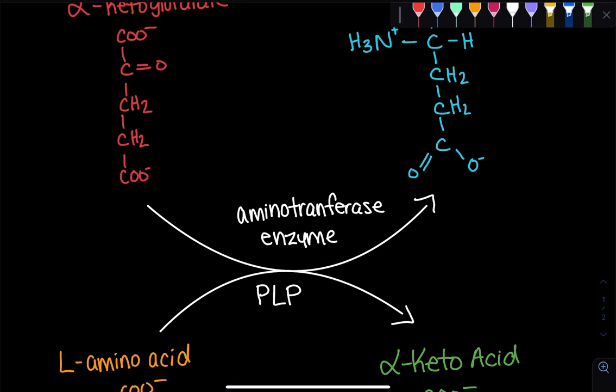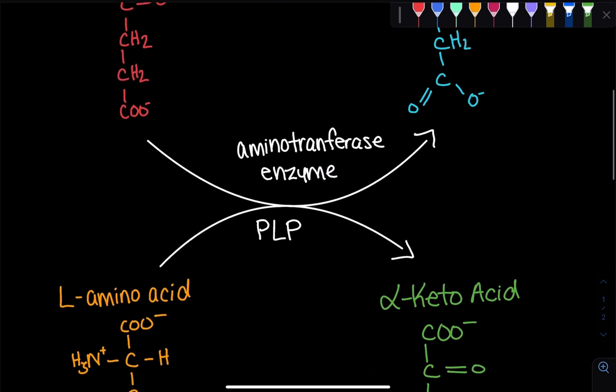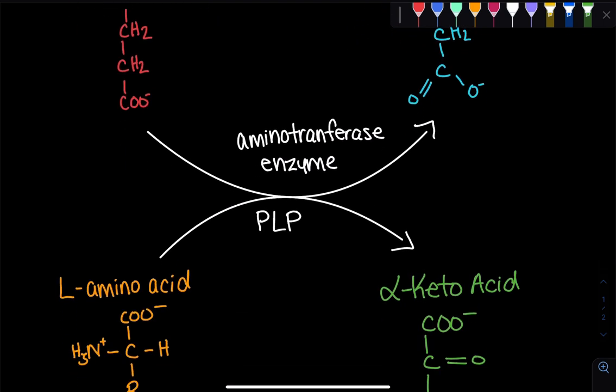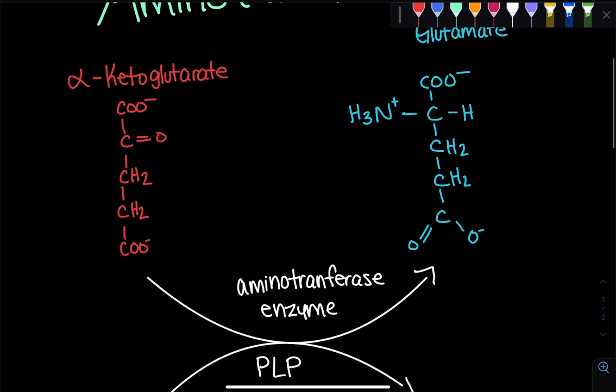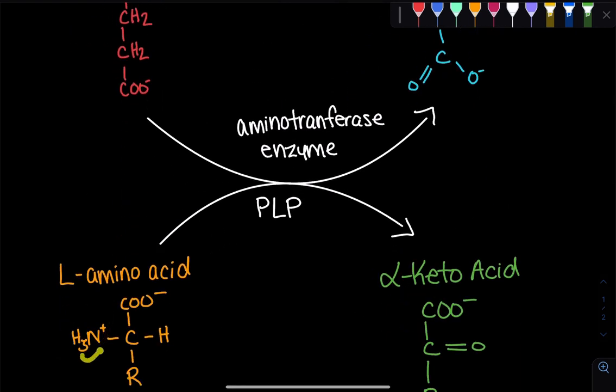Now, PLP is actually bound to the aminotransferase. Essentially, what it does is that when this reaction is occurring, it stabilizes that unstable carboanion intermediate when we're going through this process of transferring an amino group to the glutamate. When we remove this nitrogen, this carbon is going to have one less bond, so it's going to carry a negative charge. And the PLP is able to stabilize that negative charge through resonance stabilization.